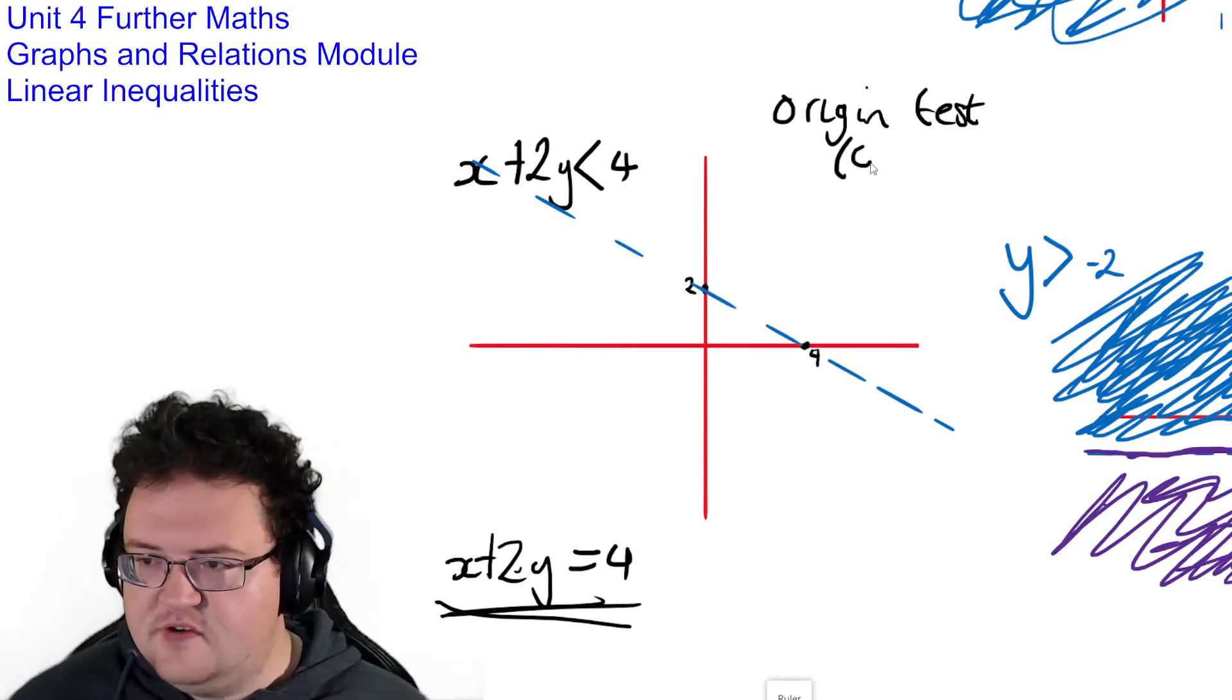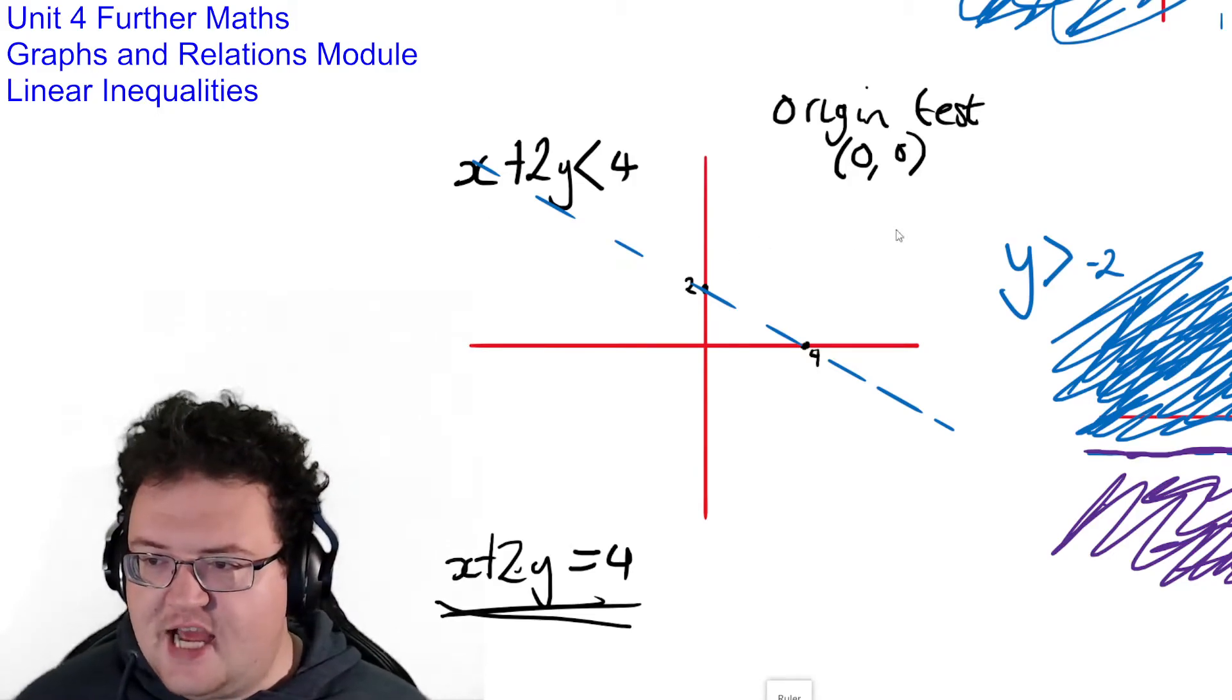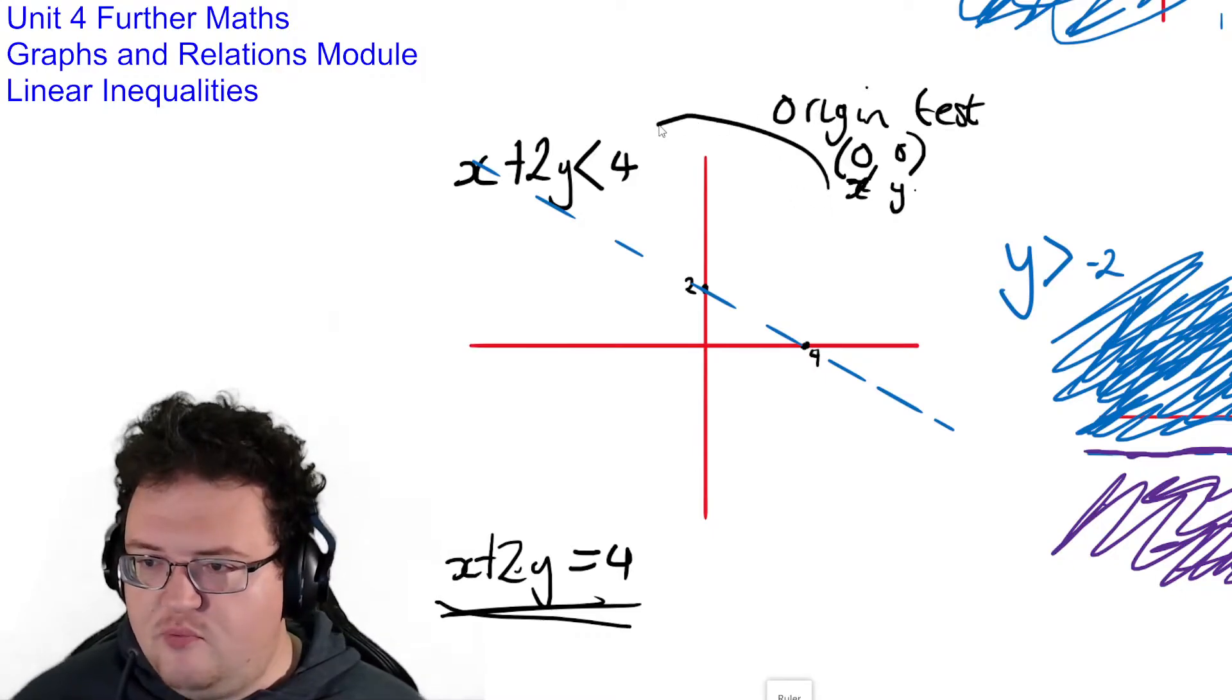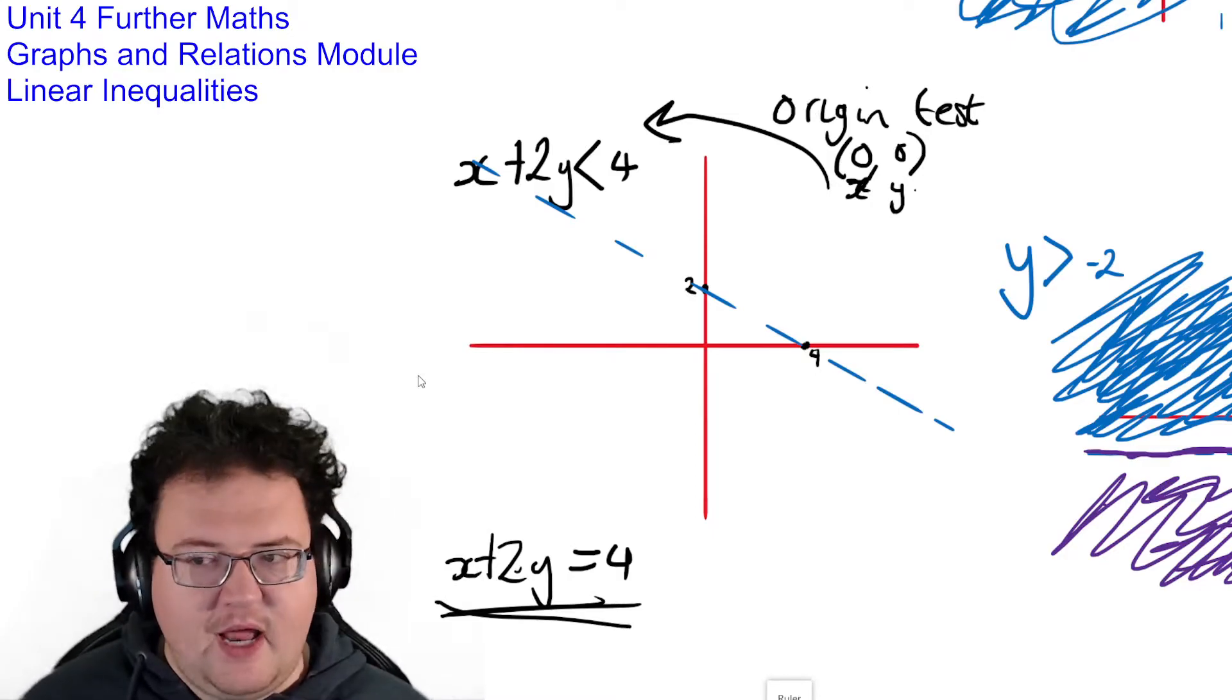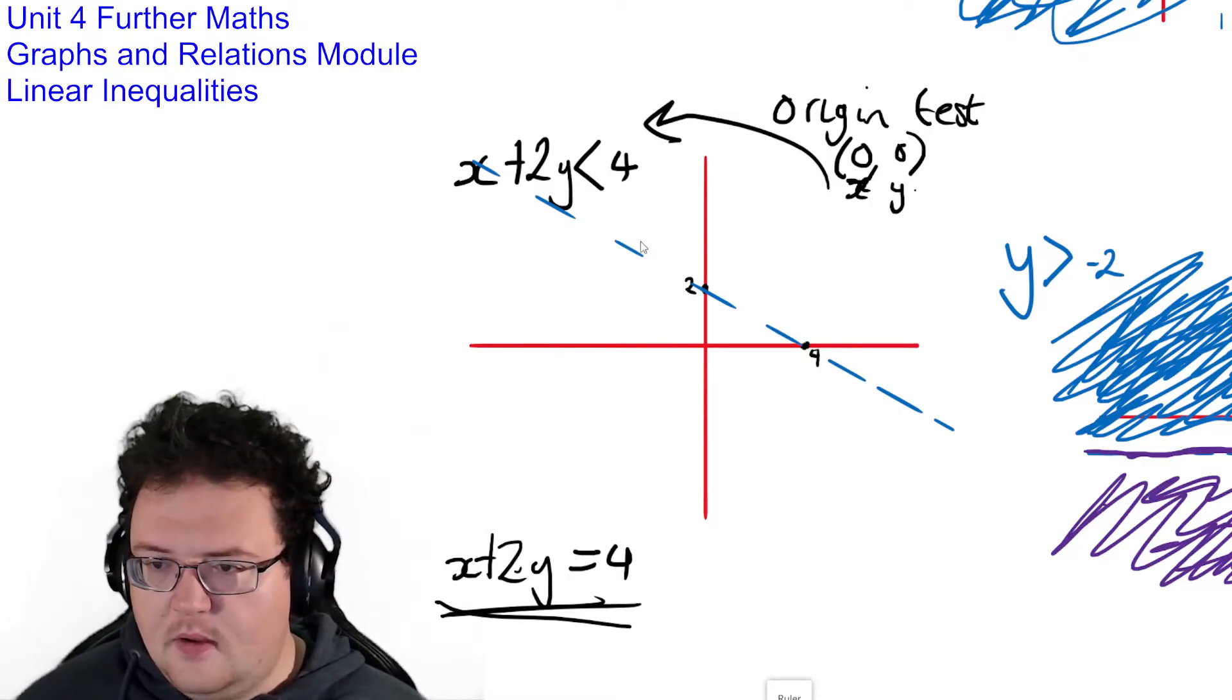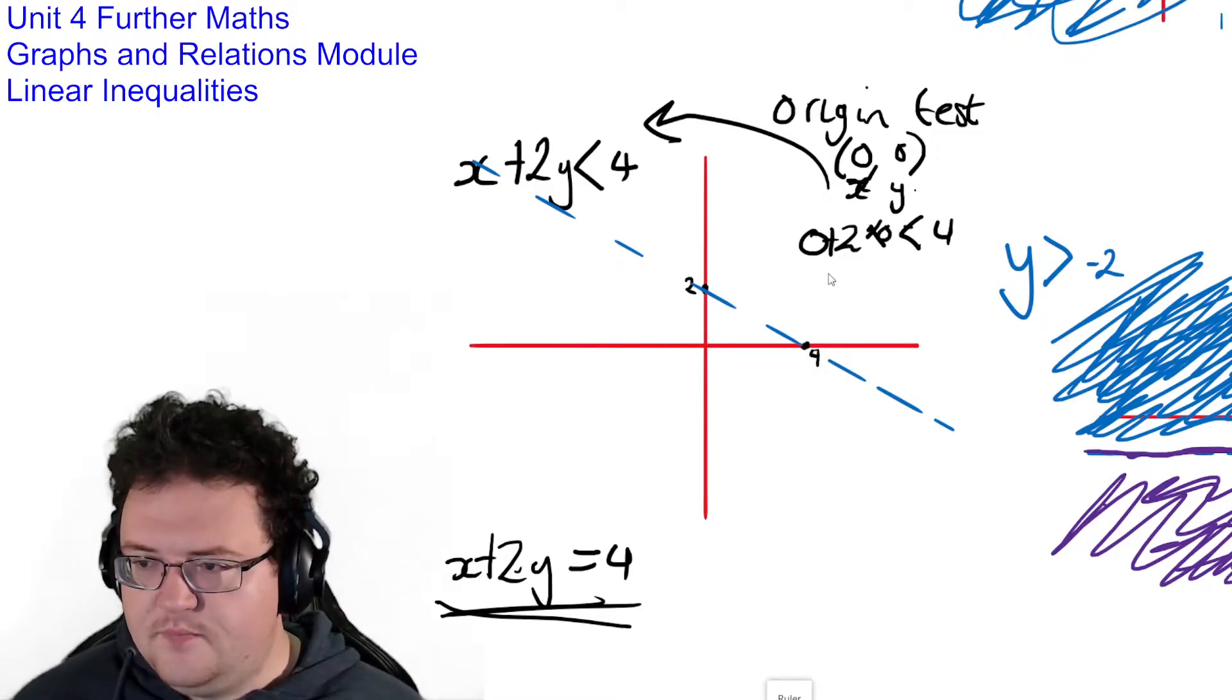And the origin is obviously 0, 0. And what we do is we take this x value and this y value and we put it into our inequality. We put it into our inequality and then we see what happens. 0 plus 2 times 0 is less than 4. Is 0 less than 4?